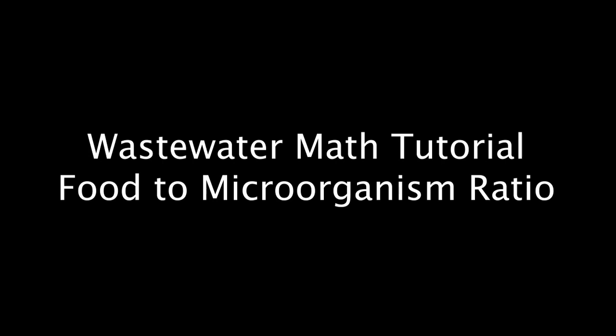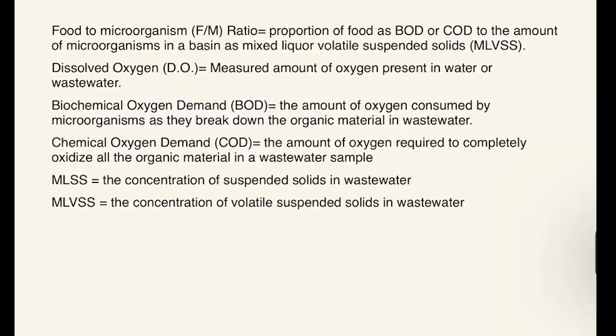Today's video will focus on advanced math related to activated sludge processes. We will be discussing how to calculate the food-to-microorganism ratio, also known as the F-to-M ratio, and supporting concepts. The F-to-M ratio is used to describe the amount of material available as a food source compared to the amount of bacteria in an activated sludge basin, and is used by operators to adjust process controls to optimize their treatment processes. It's frequently used to adjust the amount of oxygen supplied to activated sludge basins.